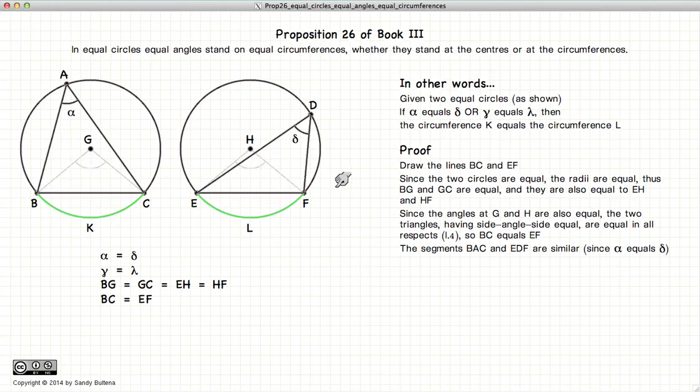So, if you recall, the definition of similar segments is when you have two circle segments where the angles within the circular segments are equal to each other. In other words, Alpha is equal to Delta. This is the definition of a similar circular segment.